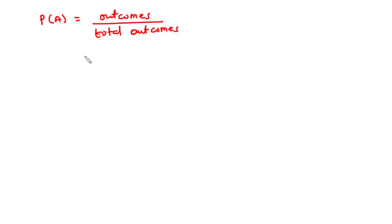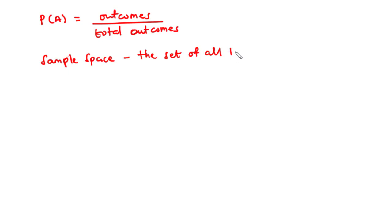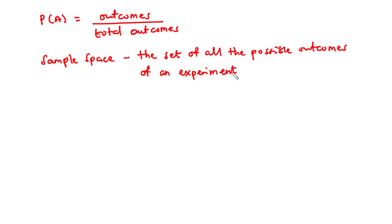Before we consider some examples on how to calculate the probability of an event, let's talk about what we call the sample space of an experiment. The sample space of an experiment is basically the set of all the possible outcomes.